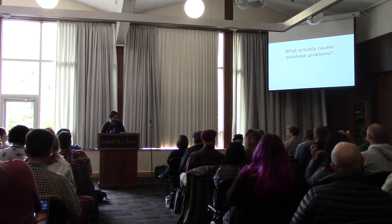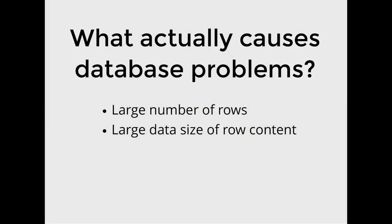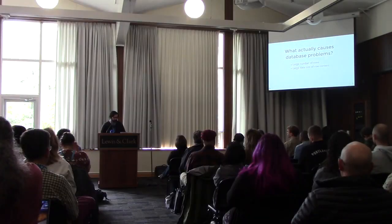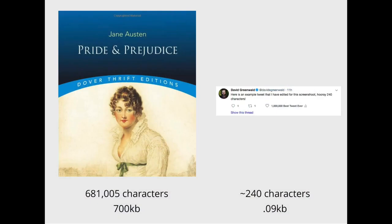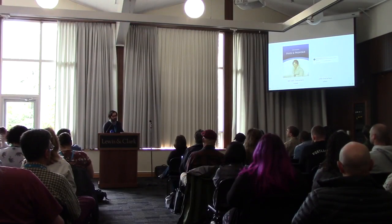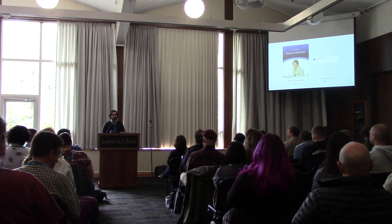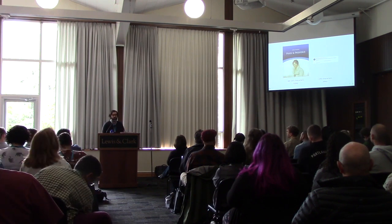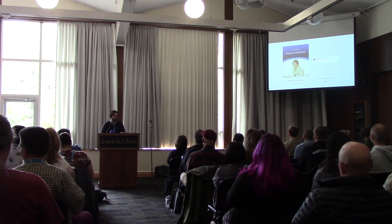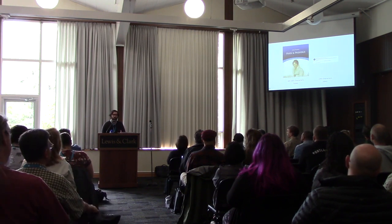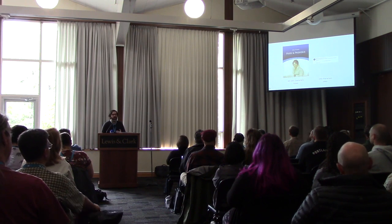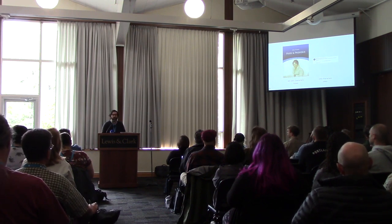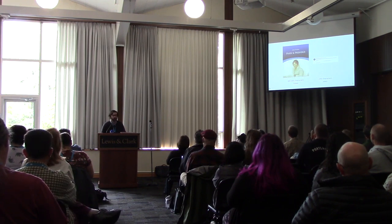What actually causes database problems? Basically a large number of rows and the data size of the row content. A blog post with Pride and Prejudice is 700 kilobytes; a tweet-length post is 0.09 kilobytes. With 5,000 posts, that difference dramatically changes database size. The data size in megabytes is actually more important to optimize for. MySQL is really good at searching through thousands of rows — that's its job — but it is less good at loading 300 megabytes of stuff into your RAM.